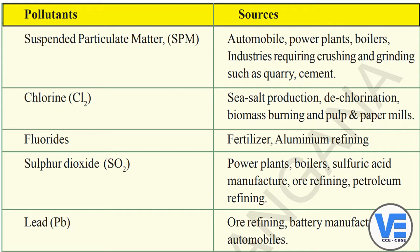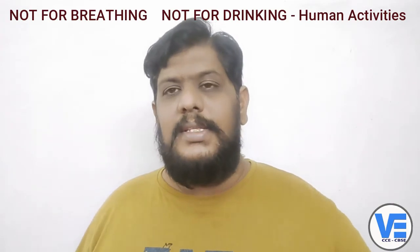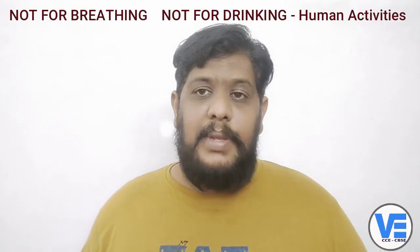The second pollutant is chlorine. Chlorine is released during sea salt production, dechlorination processes where chlorine is removed and added back into the air, and biomass burning — where plants or animals are burned. Since living organisms contain chlorine, burning them releases chlorine into the air.